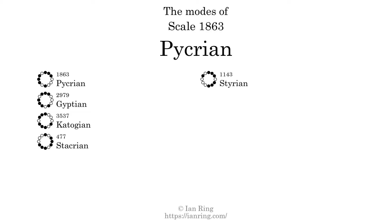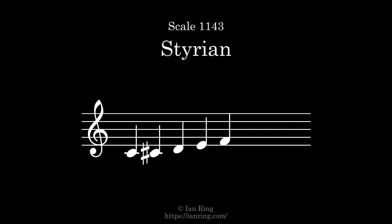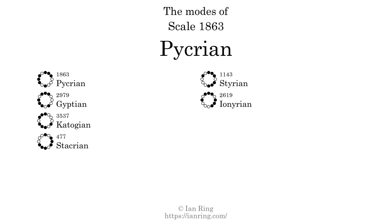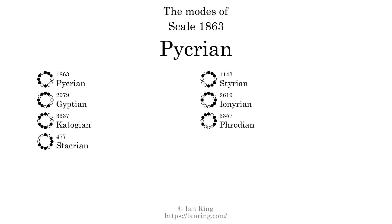The fifth mode is scale 2619, also known as Ionarian. It sounds like this. The sixth mode is scale 3619, also known as Ionarian. It sounds like this. The seventh and last mode is scale 3357, also known as Frodian. It sounds like this.